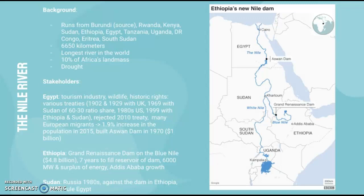In 1902 and 1929 they made treaties with the UK over rights to the Nile. In 1969 they made one with Sudan, establishing a 60-to-30 ratio — Egypt was entitled to 60% of the water and Sudan 30%. In the 1980s they made a treaty with the US, and in 1999 one with Ethiopia and Sudan, though they never really agreed on a set amount per nation. In 2010 they rejected a further treaty, so there hasn't been much progress in managing the conflict.